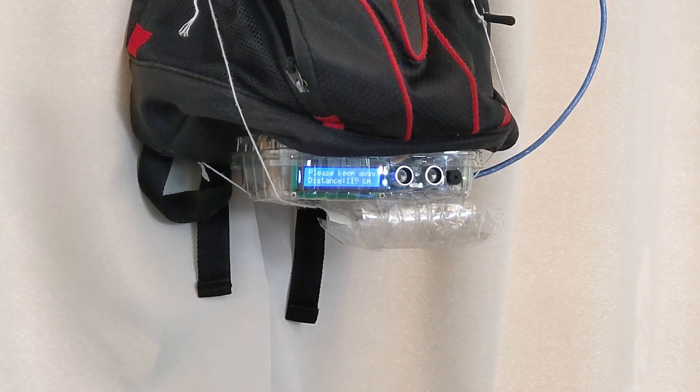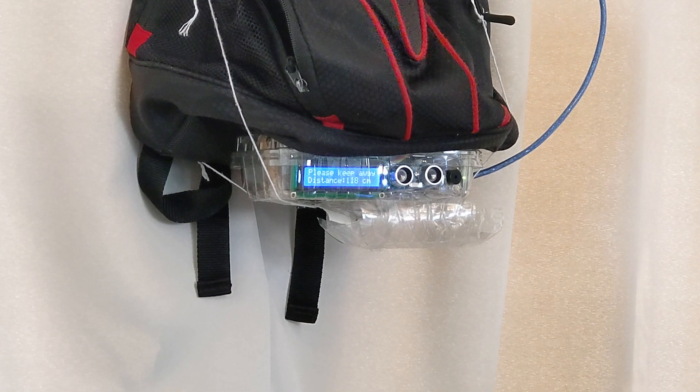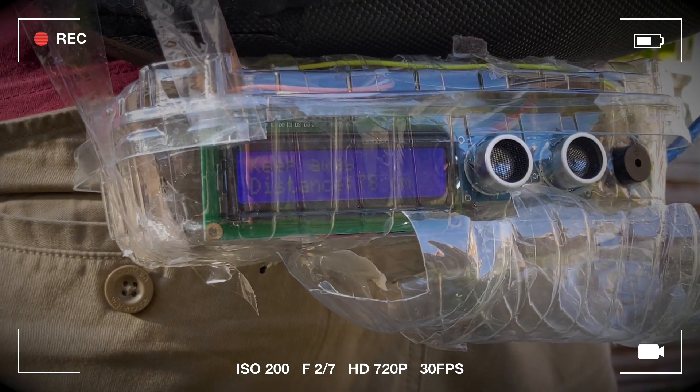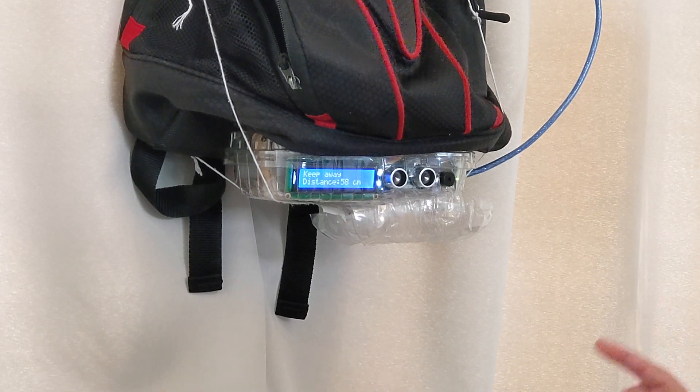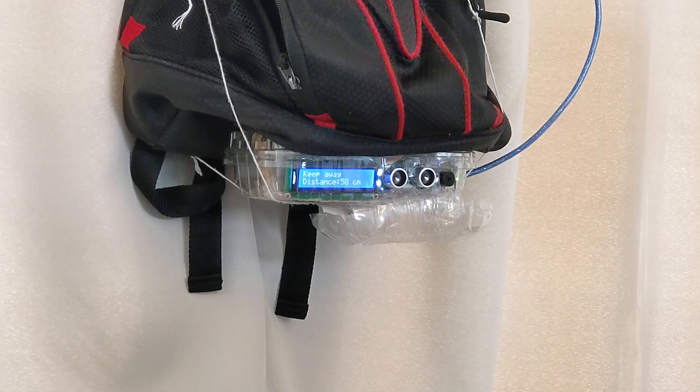If the distance is between one meter and 50 centimeters, the backlight of the LCD flashes and the LCD shows keep away and the distance is shown underneath.